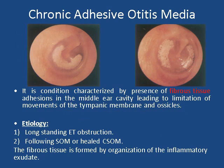The second type of chronic non-suppurative otitis media is adhesive otitis media. It is the presence of fibrous adhesions inside the middle ear cavity, causing limitation of movement to the tympanic membrane and the ossicles. These fibrous adhesions are formed by organization of the inflammatory exudate present inside the middle ear cavity. The etiology includes long-standing Eustachian tube obstruction, following secretory otitis media, or healed chronic suppurative otitis media.